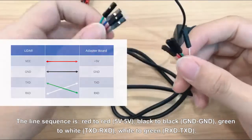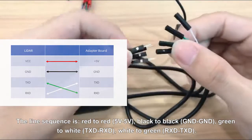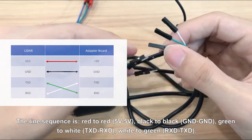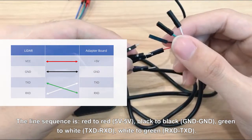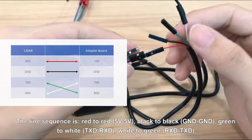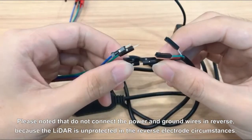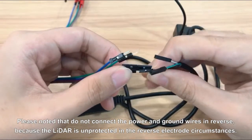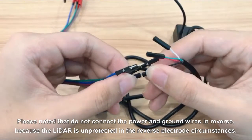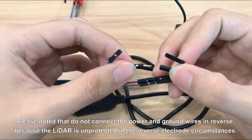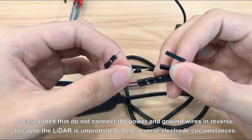The line sequence is red to red that's 5V to 5V, black to black that's ground to ground, green to white that's TX to RXD, and white to green that's RX to TX. Please note that do not connect the power and ground wires in reverse, because the LiDAR is unprotected in the reverse electrode circumstance.